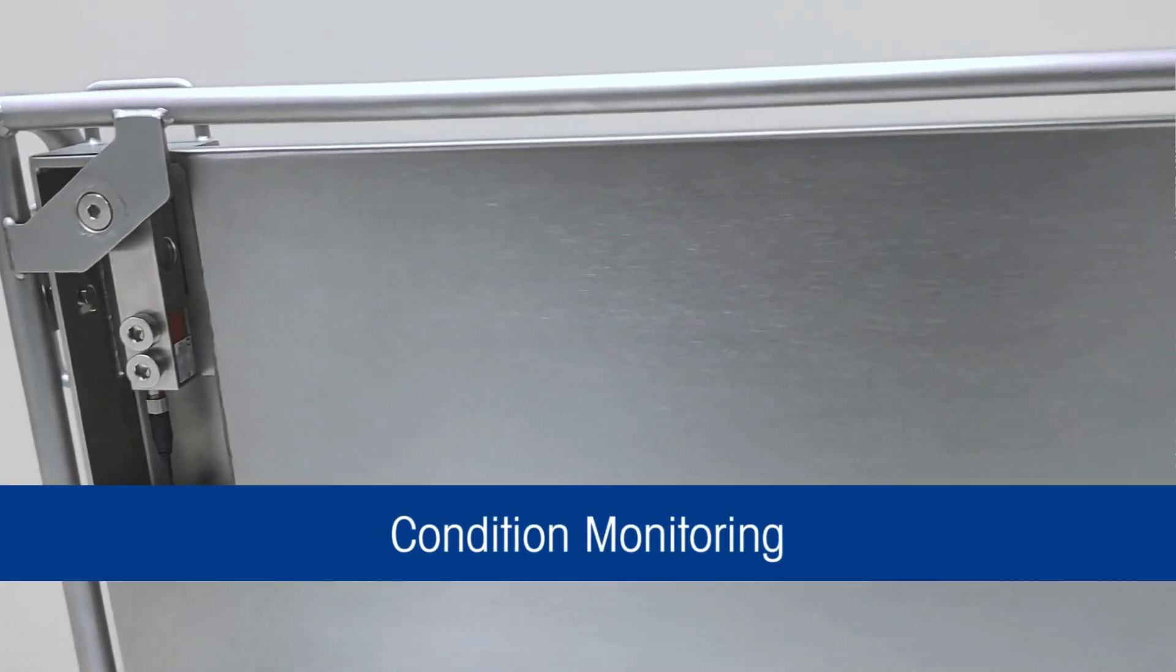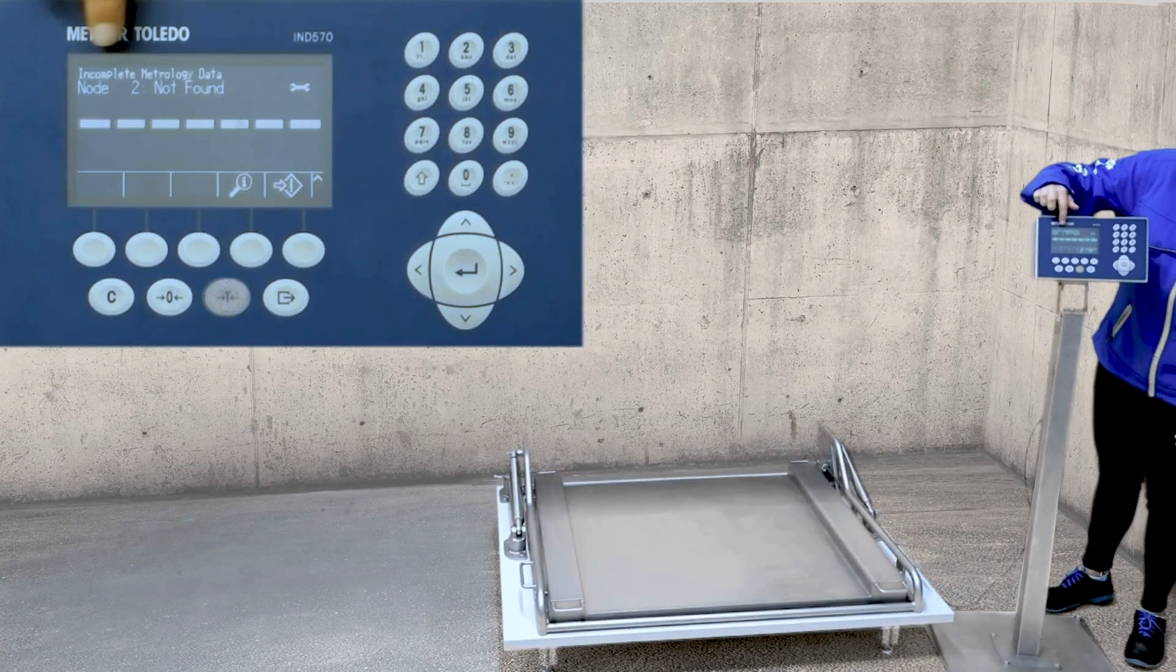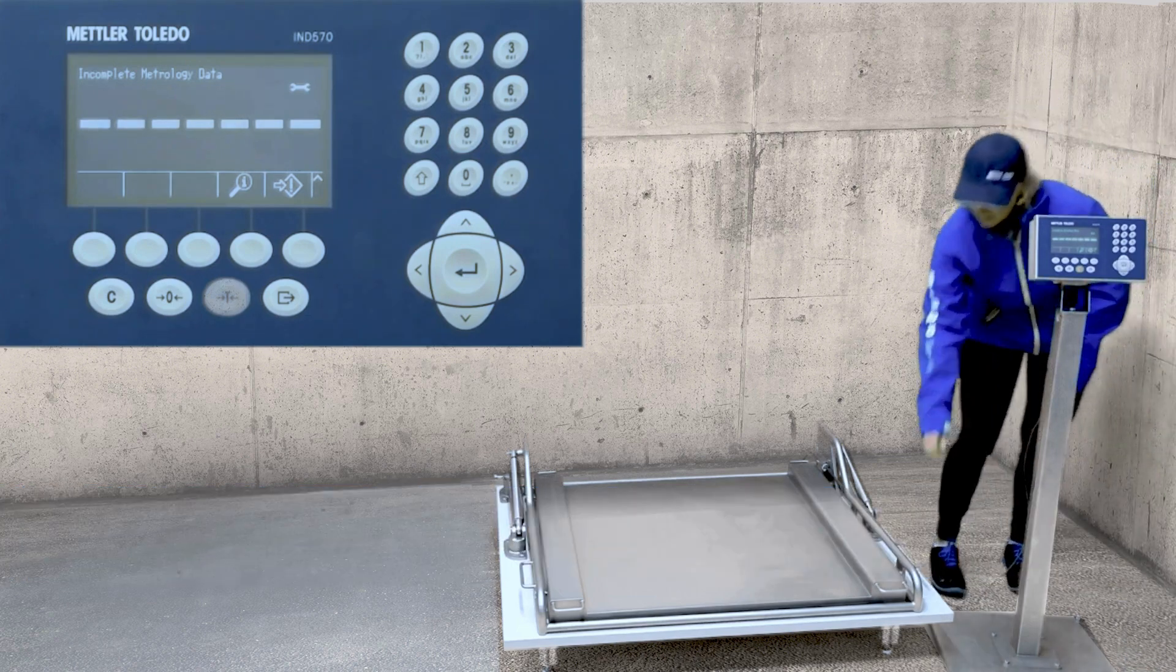The Smart Load Cells actively monitor the condition of the scale, correcting measurement deviations and alerting you to potential errors before they cause downtime or out-of-spec products.